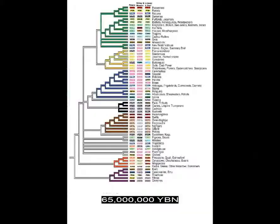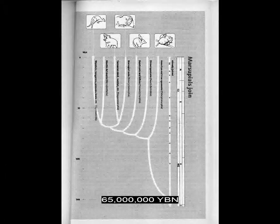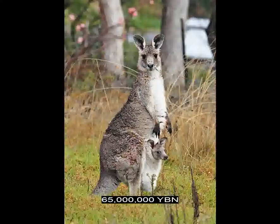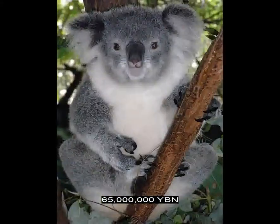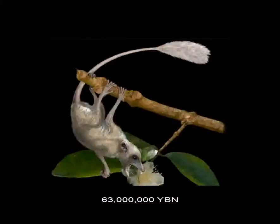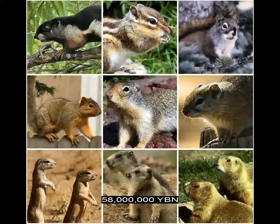Mass extinction. Birds Gruiformes — cranes and rails. Marsupial moles. Marsupials: Tasmanian devil, numbat. Marsupials Diprotodontia evolve — wombats, kangaroos, possums, koalas. Rodents, beavers. Primates evolve — opposable thumb. Birds Strigiformes evolve — owls. Rodents, squirrels.